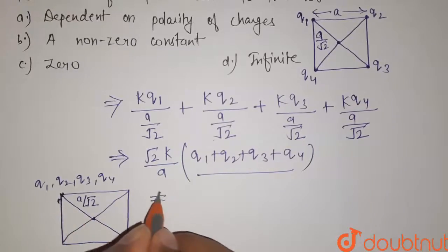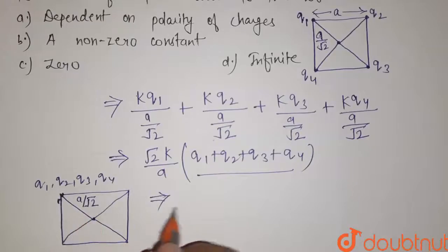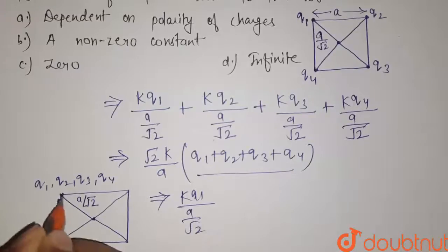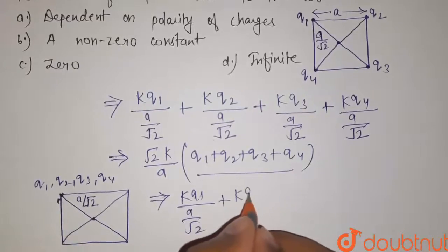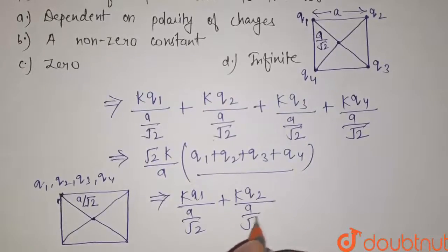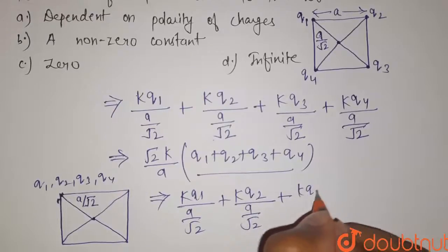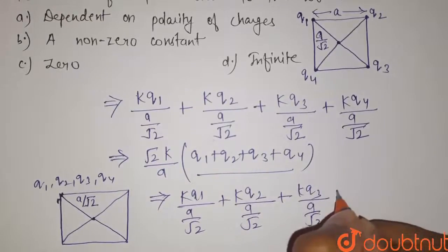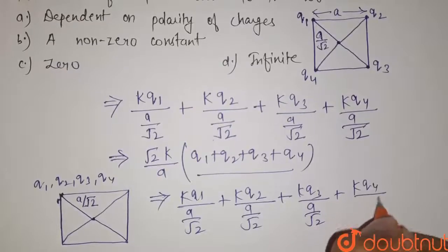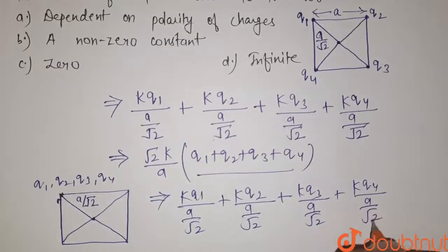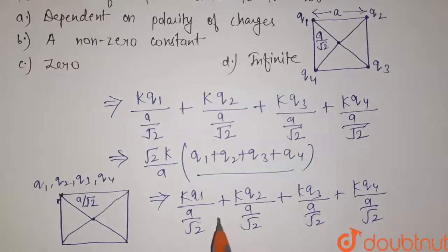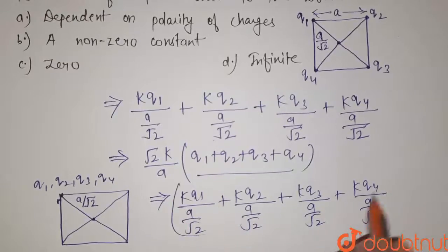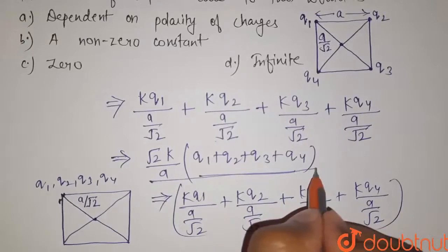Now in this case the potential will be kq1 divided by a by root 2 because the distance here is a by root 2 plus for second it is kq2 divided by a by root 2 plus kq3 a by root 2 plus kq4 divided by a by root 2. And on simplification of this we will get this is equals to as that of the previous.